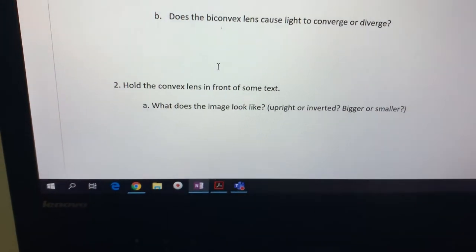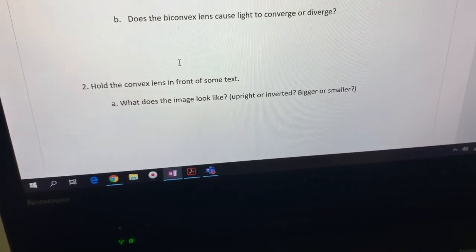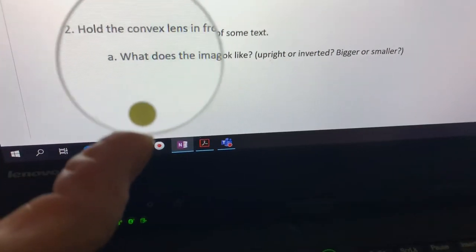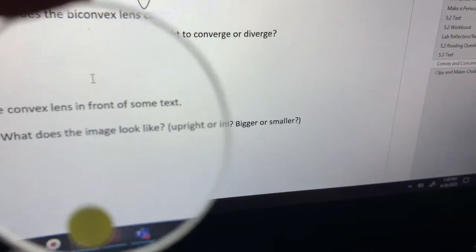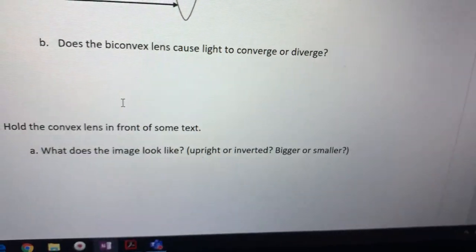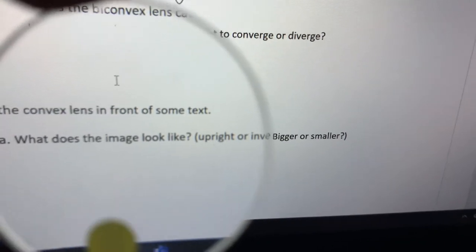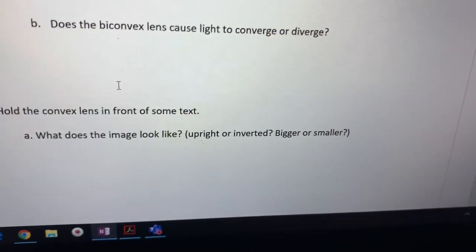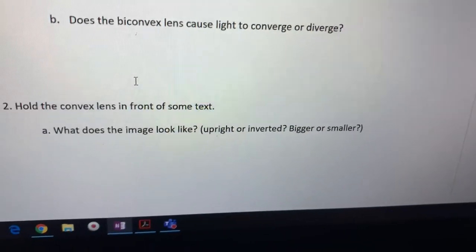Next, number two says pull the convex lens in front of some text. What does the image look like? Bigger, smaller? All right, let me see.